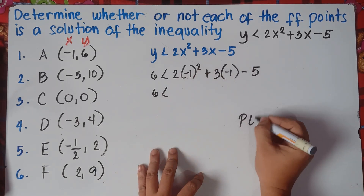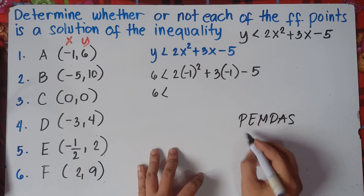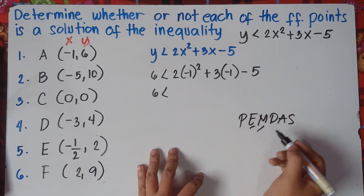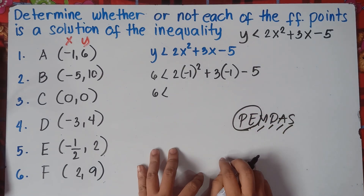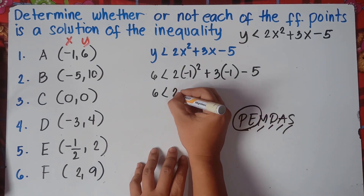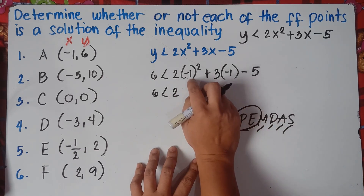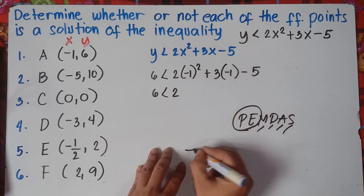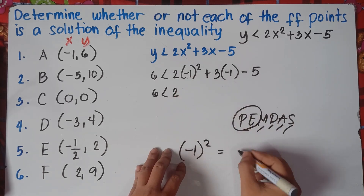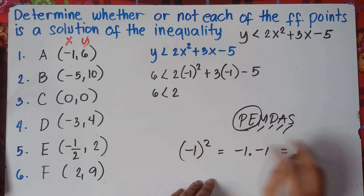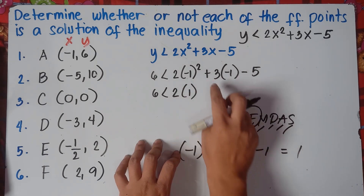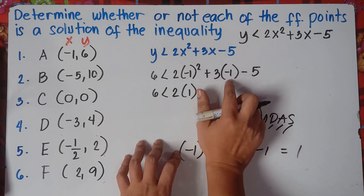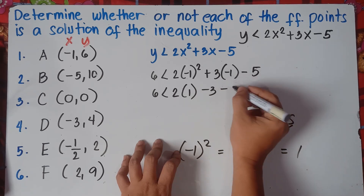So copy 2. Simplify negative 1 raised to the power of 2 — it means negative 1 times negative 1, which is positive 1. So this will be 2 times positive 1. Then 3 times negative 1 is negative 3. Minus 5. This gives us 6 less than 2 times 1 is 2, minus 3, minus 5.